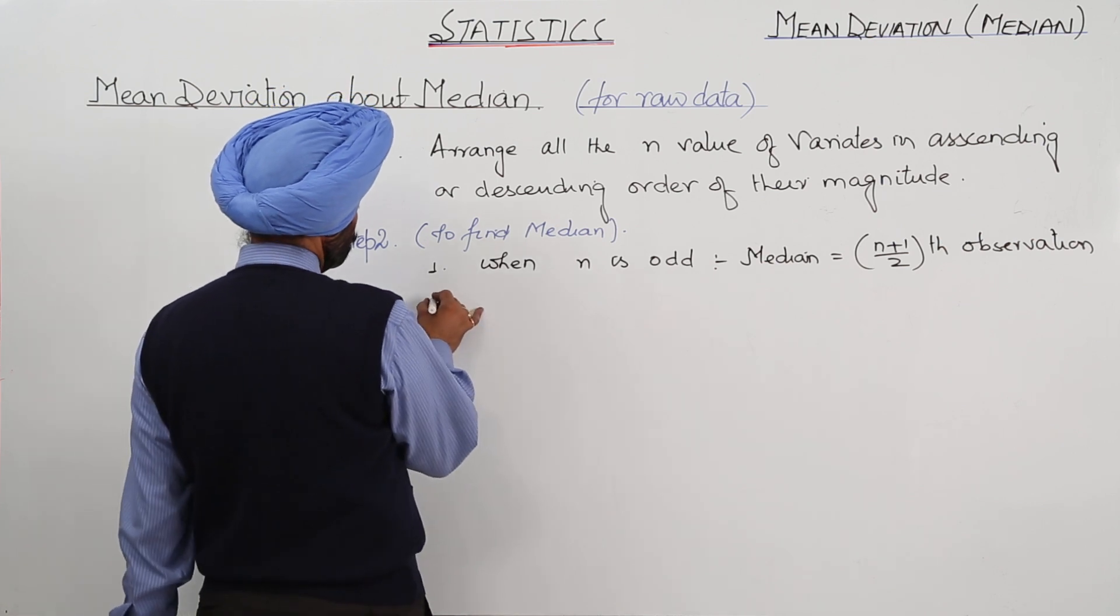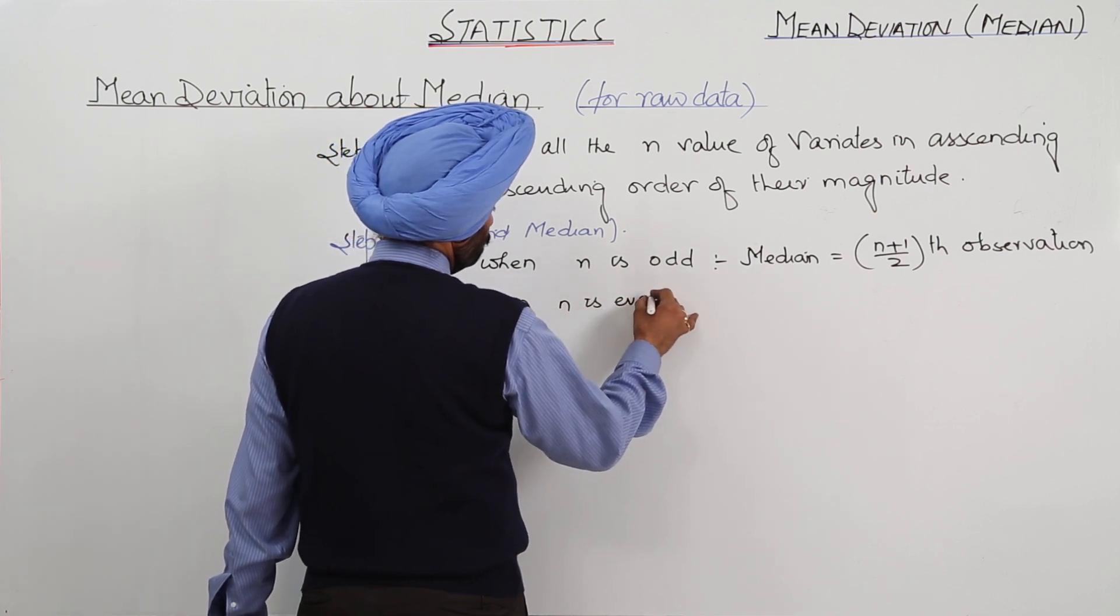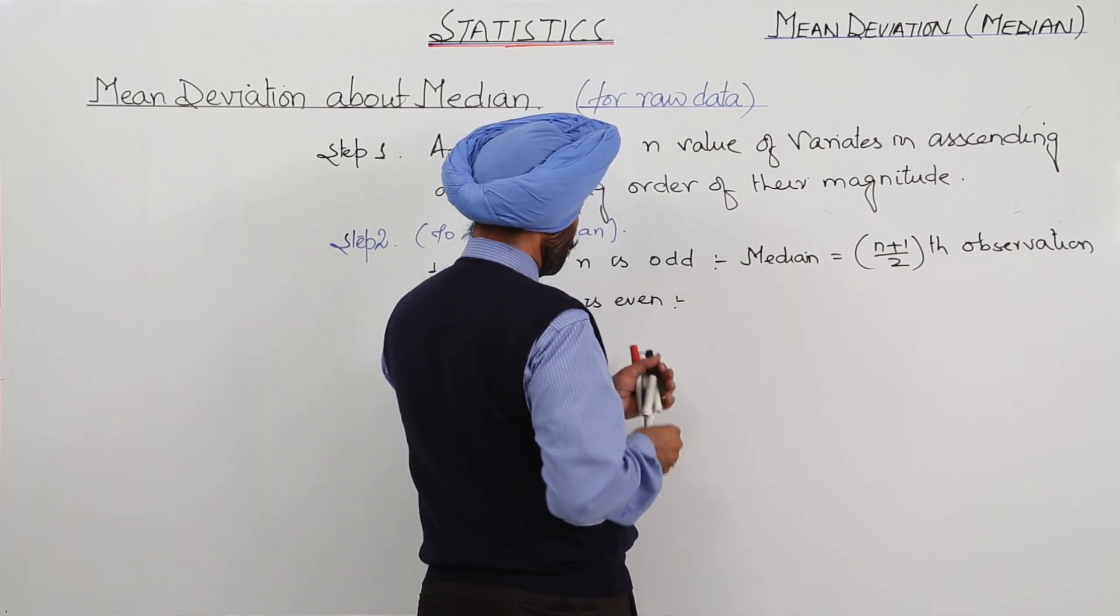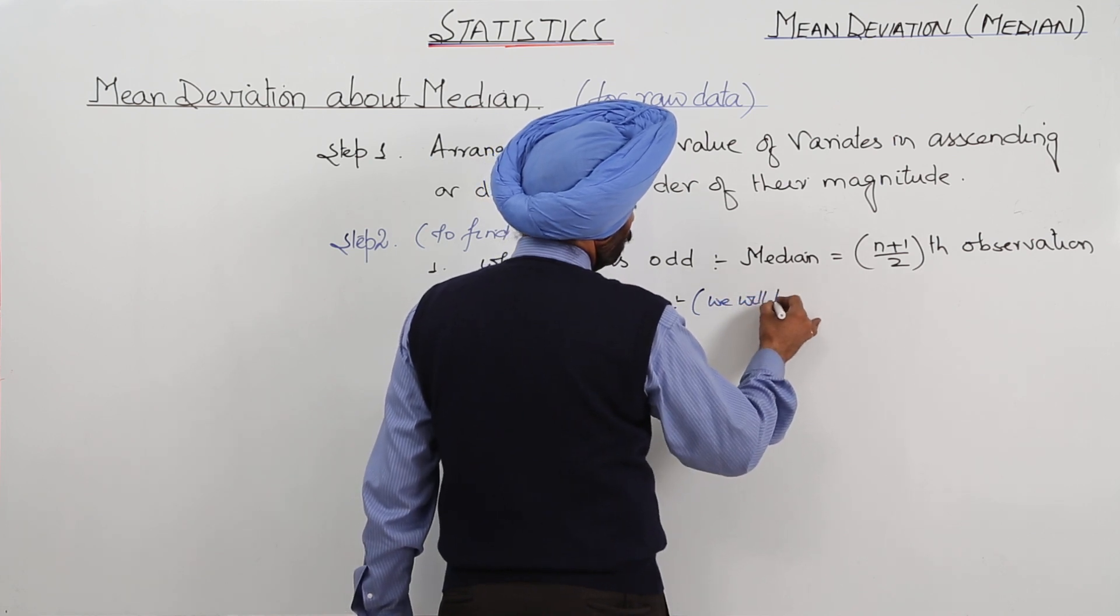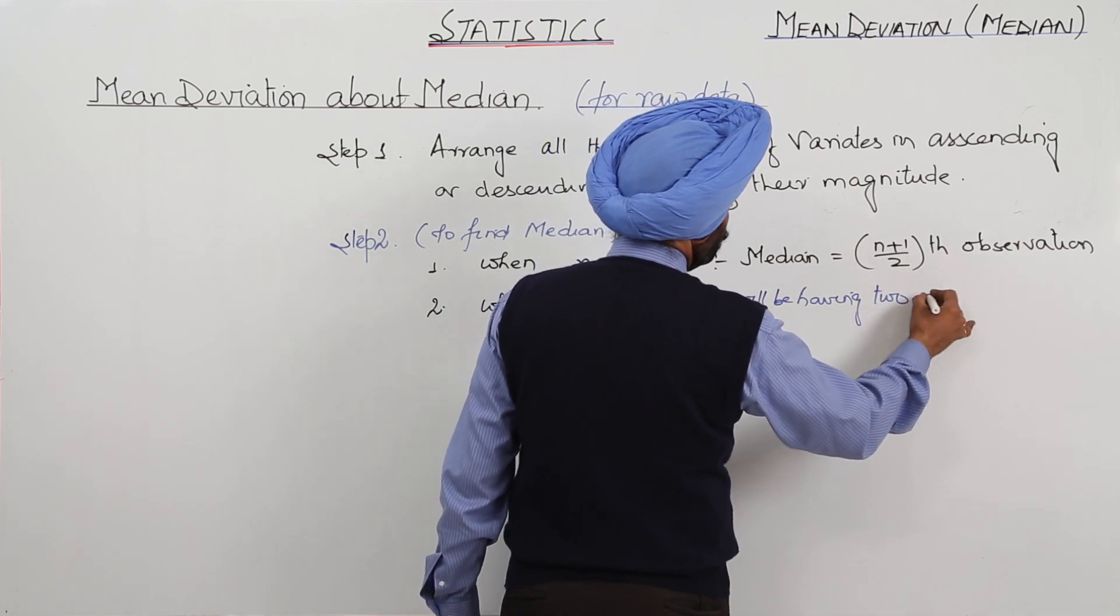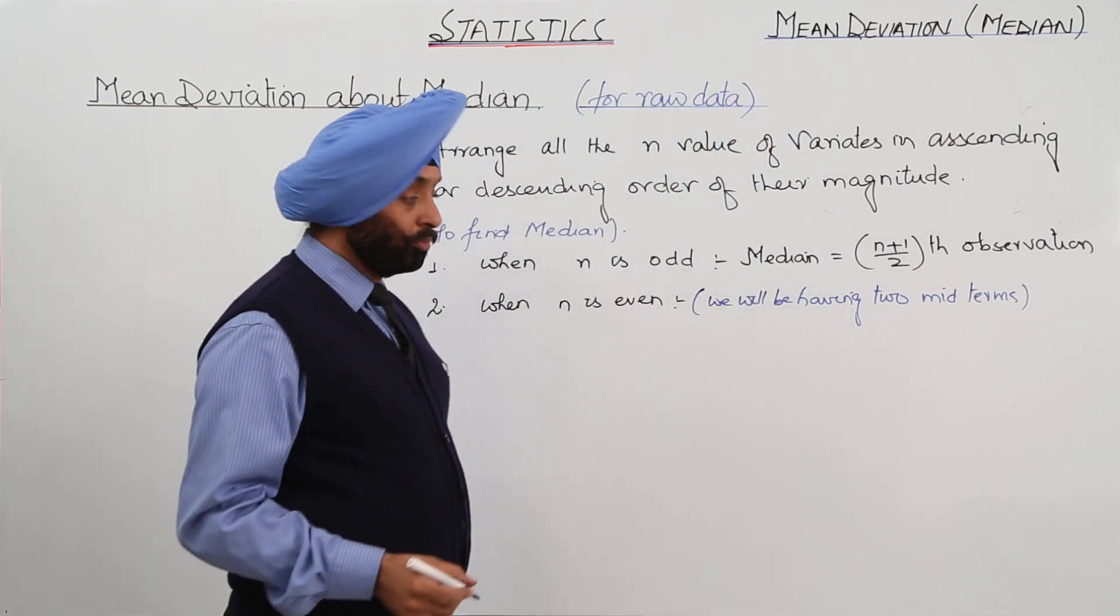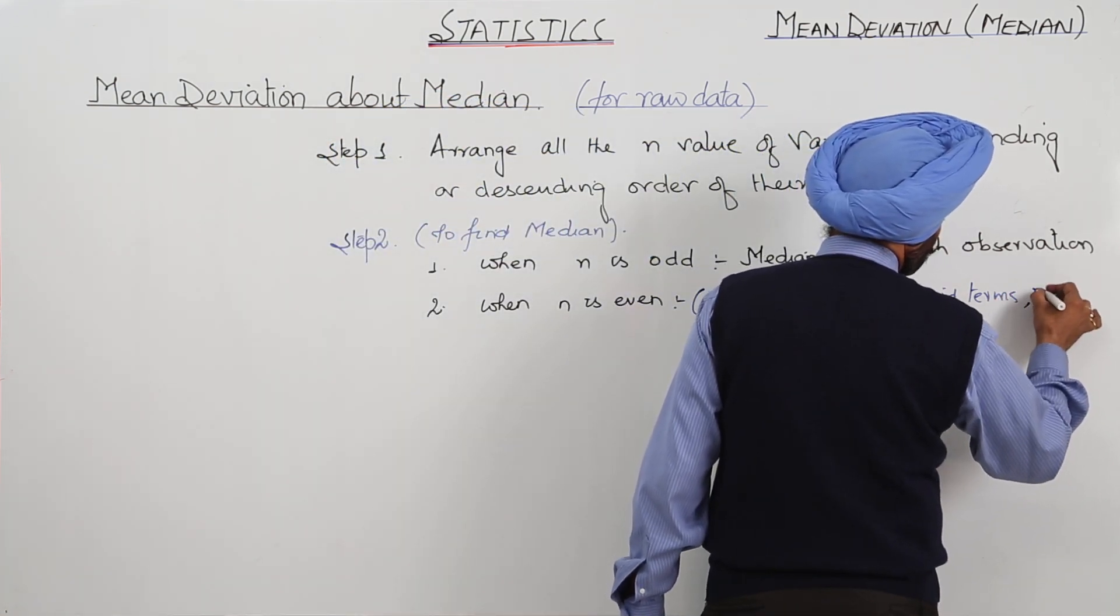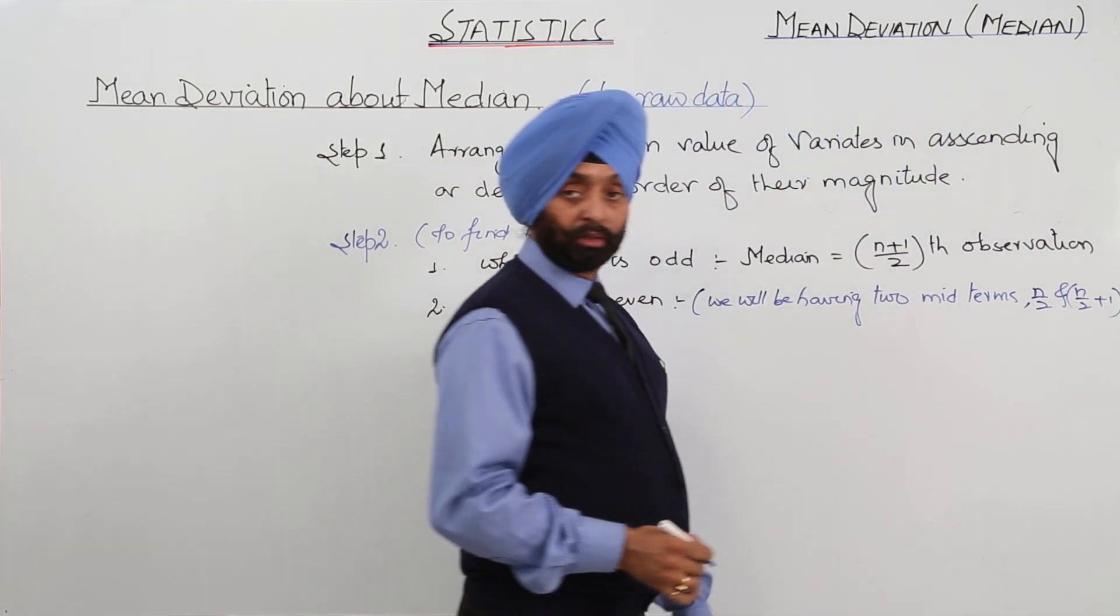And when n is even, we will be having two midterms. Is it clear? We will be having two midterms. And the midterms will be n by 2 and n by 2 plus 1. These will be the two midterms.